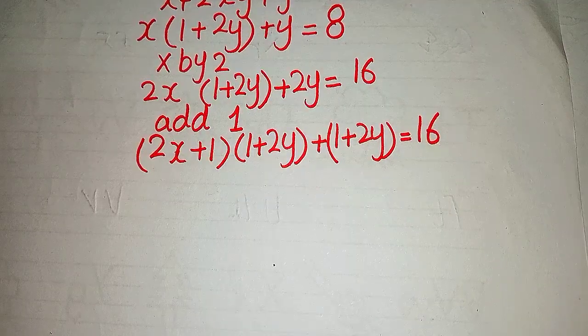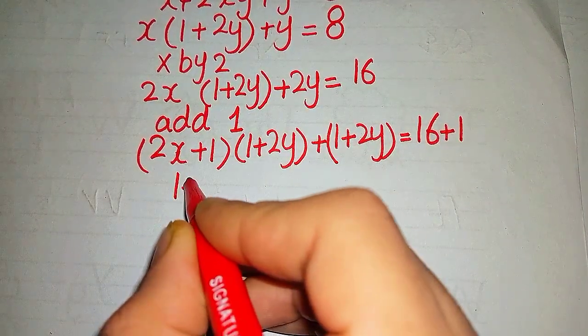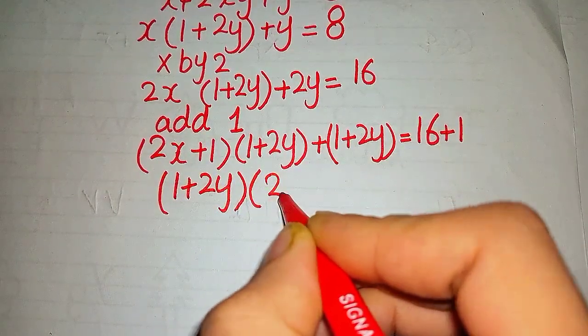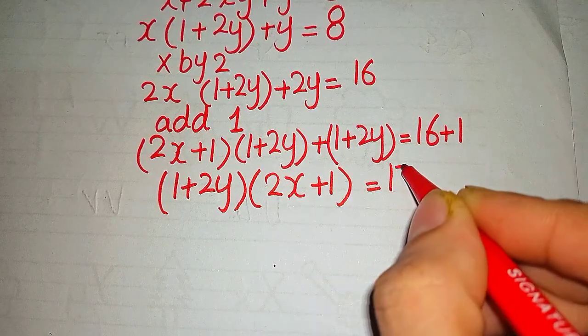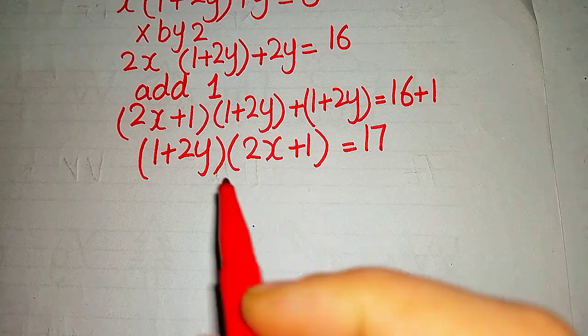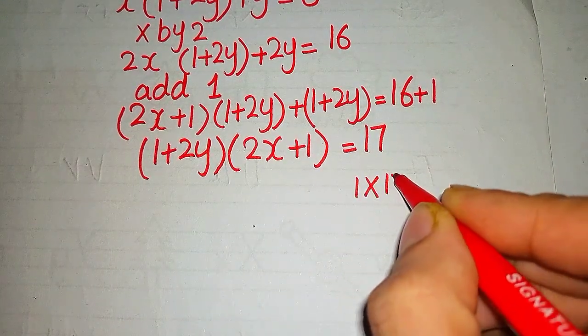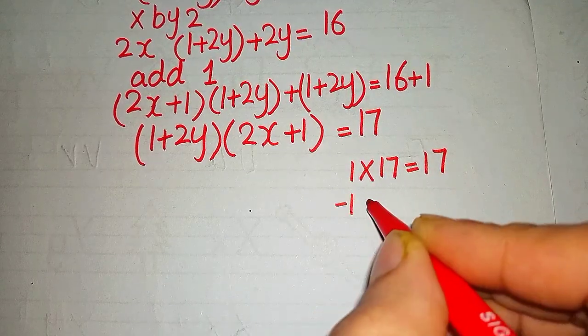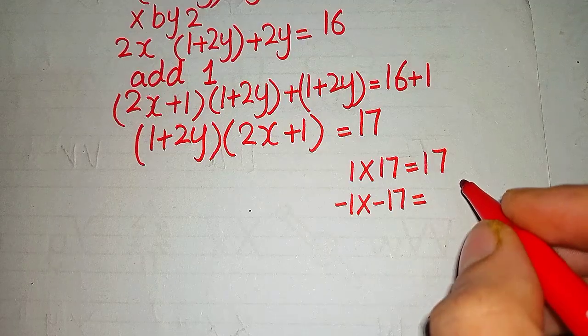So we take it common as (1 + 2y)(2x + 1) = 17. Now we have two solutions for this situation: 1 × 17 = 17 and -1 × -17 = 17.